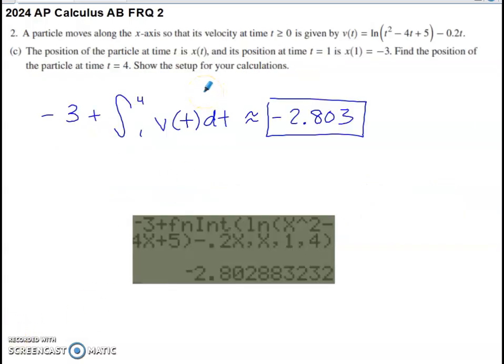Part C says that the position of the particle at time 1 is negative 3. Find the position of the particle at time 4. Show the setup for your calculations.